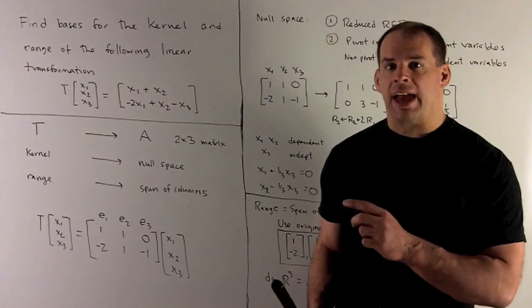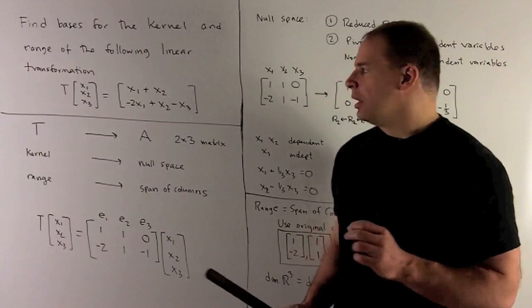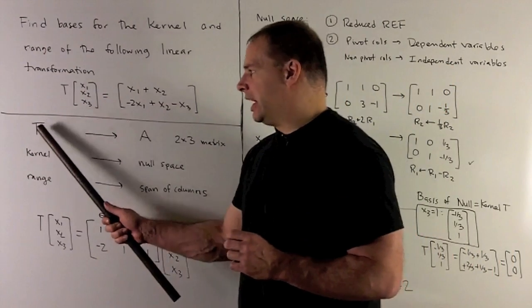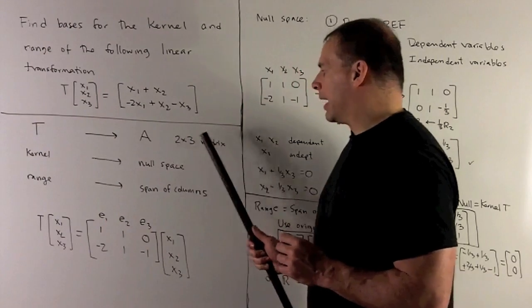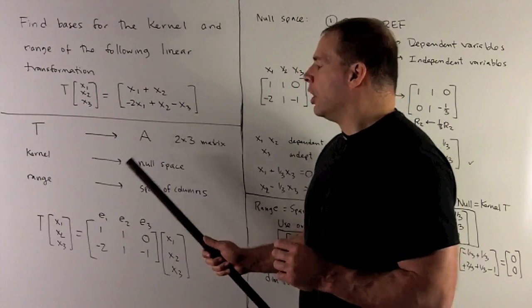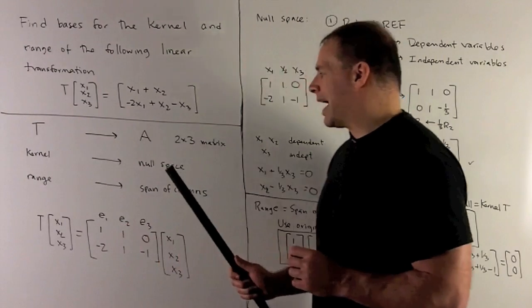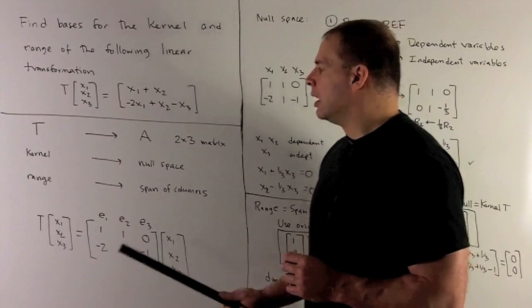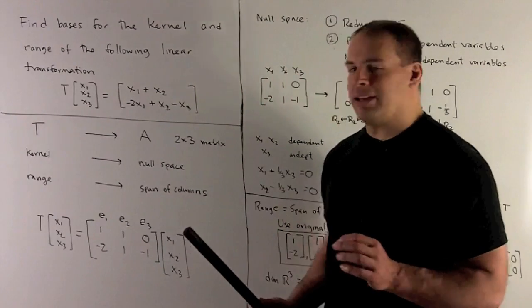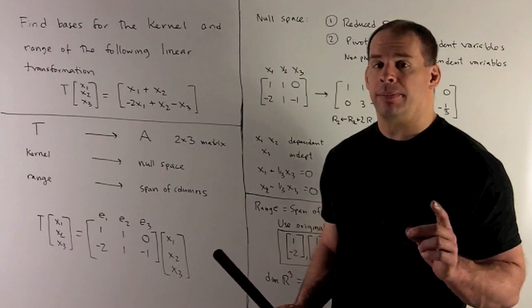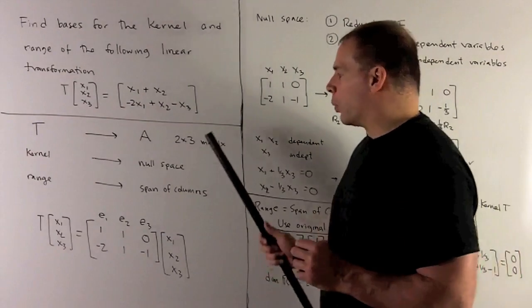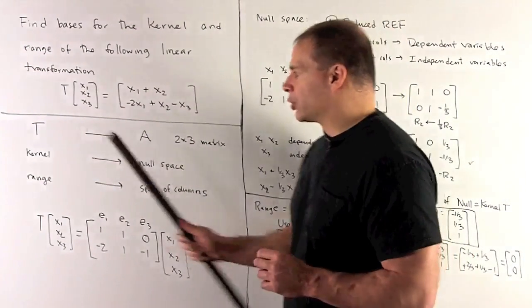Now, with our matrix A, we have a dictionary. So linear transformation T corresponds to the 2 by 3 matrix A. The kernel of T is going to correspond to the null space of A. The range of T is going to correspond to the span of the columns of A. So we're going to work on this side to get our answer over here.